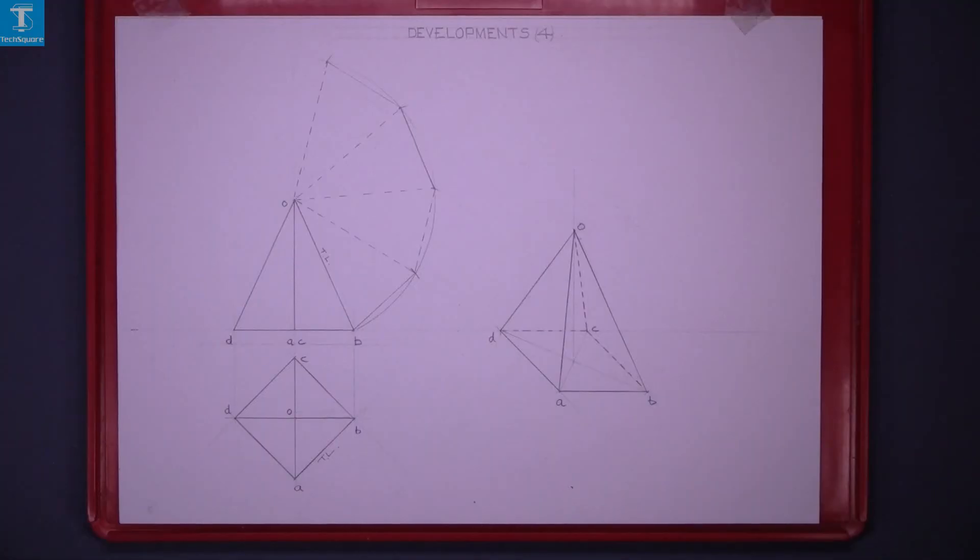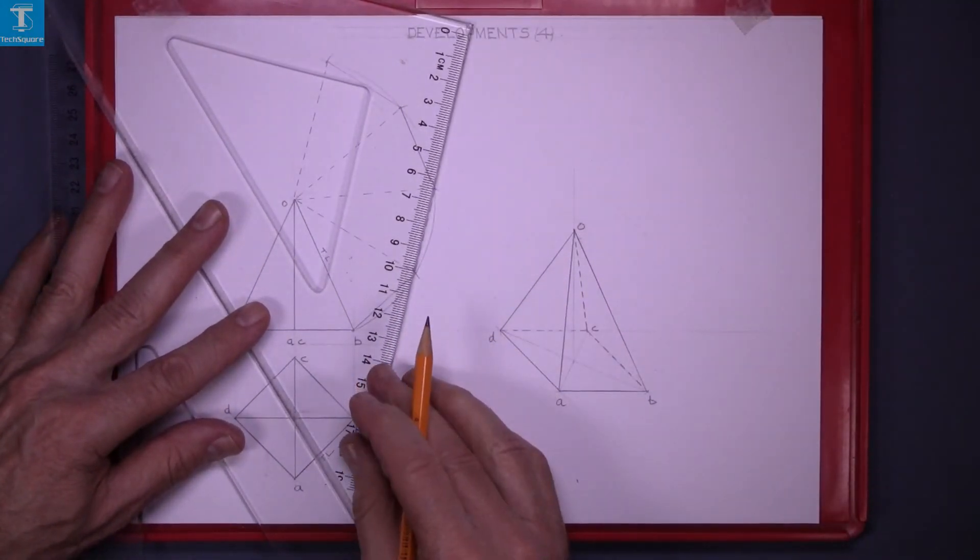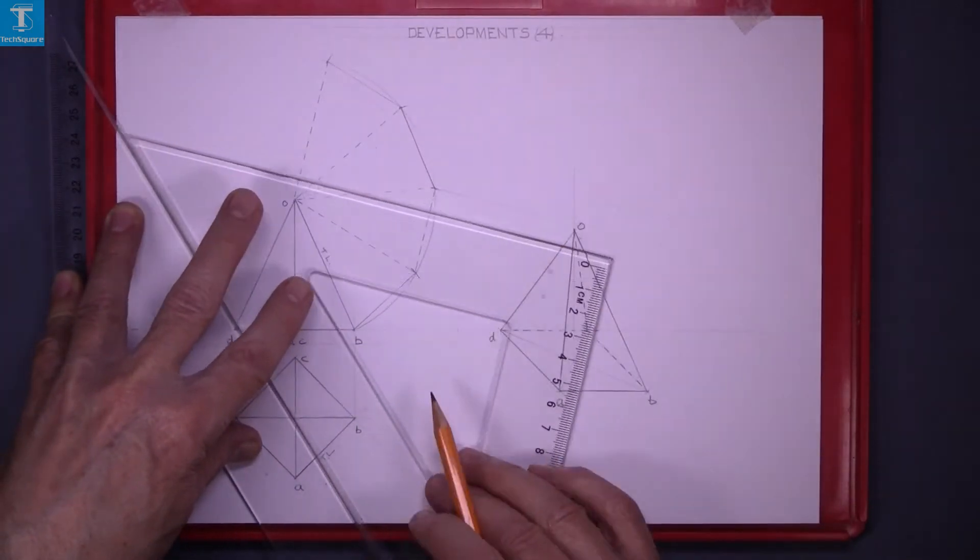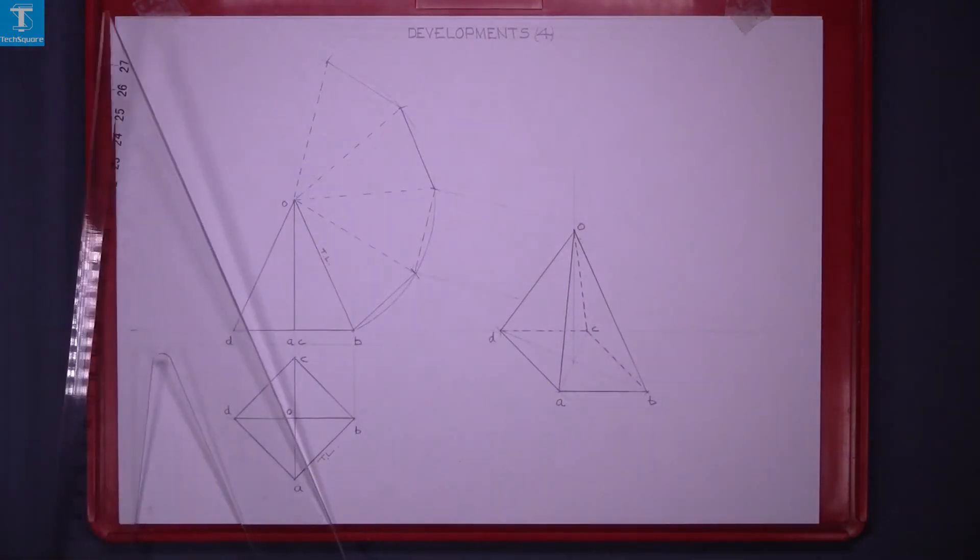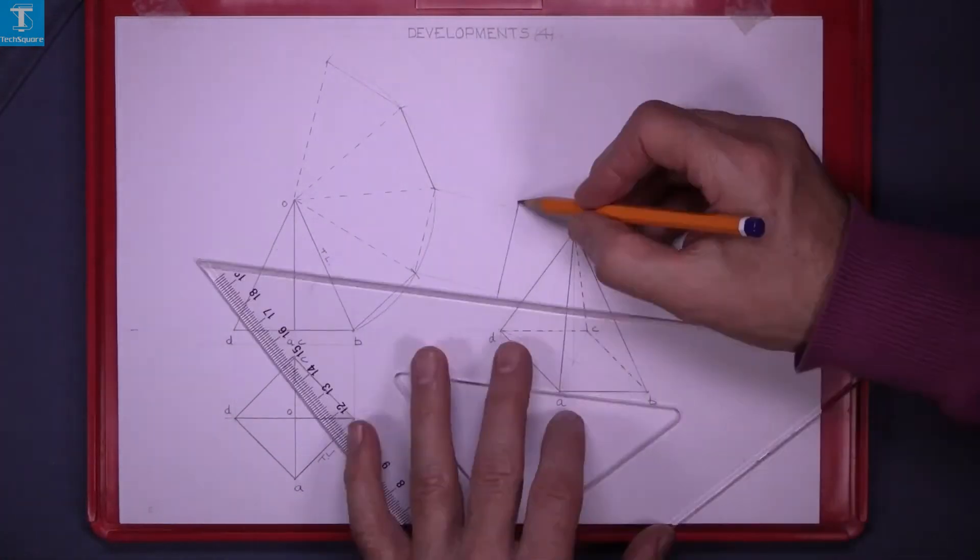And now using the two set squares, line up with this line. Slide the top set square and draw that line which will be perpendicular. With the compass set to the length, mark it off and join those points.